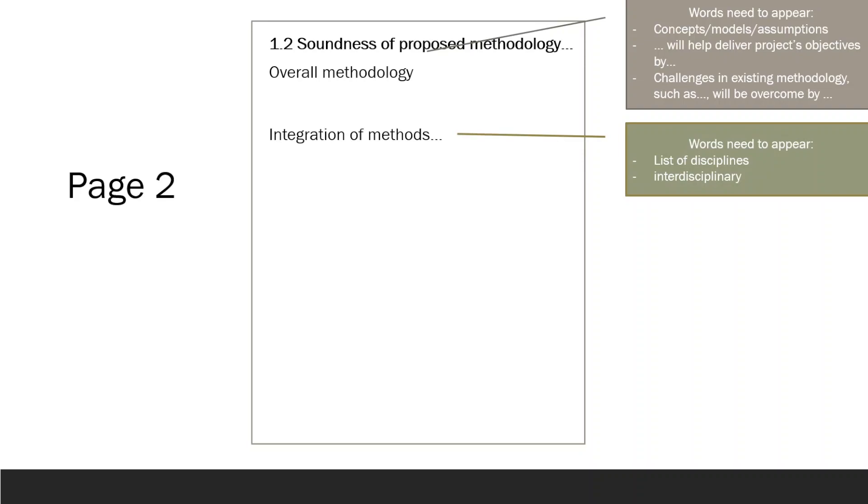Move on to the integration of methods and disciplines to pursue the objectives section. Here, you need to emphasize how your project will be interdisciplinary and list the relevant disciplines that will be involved. Explain how your project will make use of these disciplines to achieve its objectives.